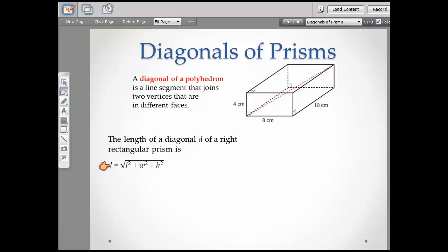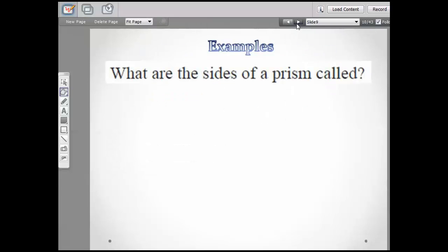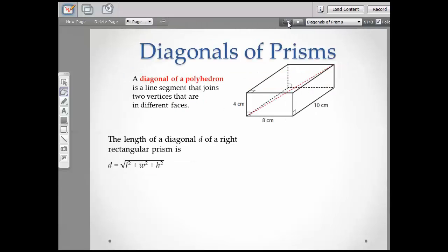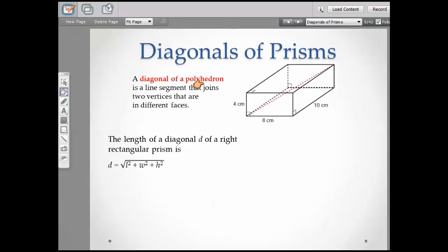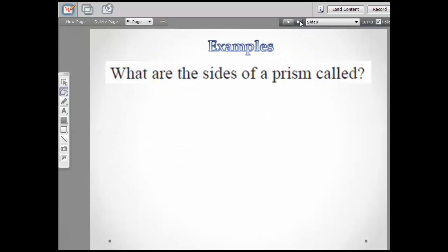D is for distance or diagonal, square root of the length squared plus the width squared plus the height squared. I really thought we went through and worked out that problem, but I guess we didn't. We're going to work one. Don't worry about that.